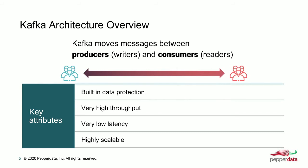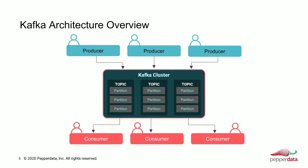Kafka has built-in data replication. It is designed for very high throughput, very low latency, and it's very scalable. You don't get all of these without some costs associated with which one you'd like to get the most of. With anything in a distributed system design, there are trade-offs you have to take into account when architecting, managing, and tuning these systems.